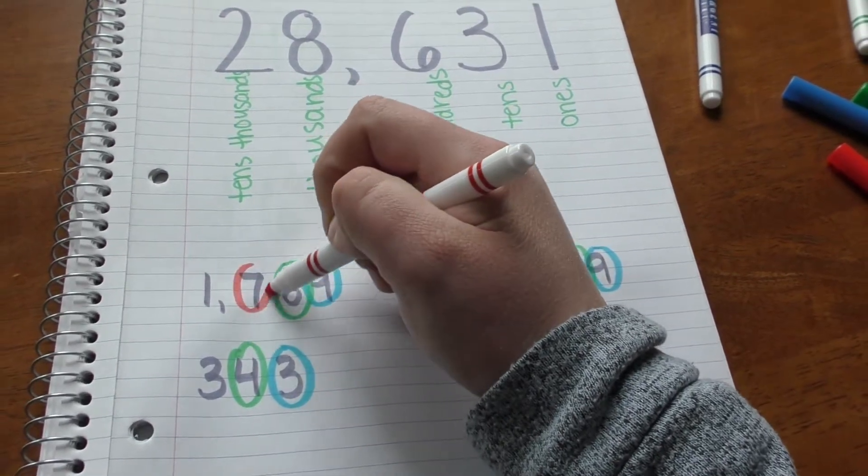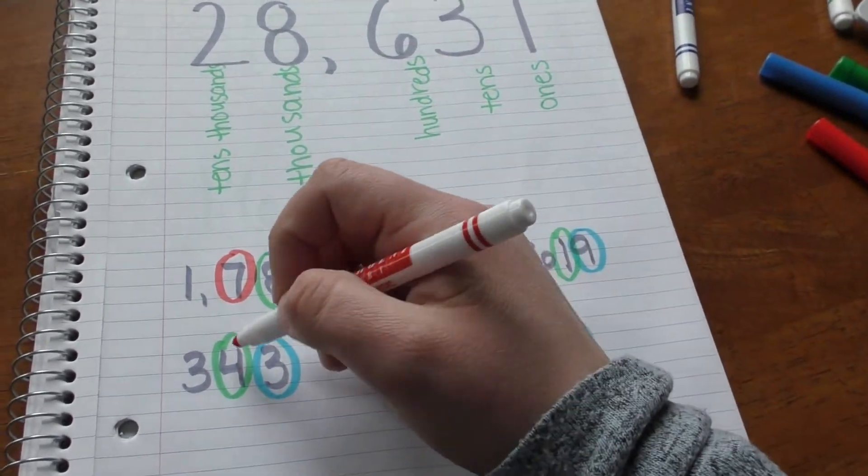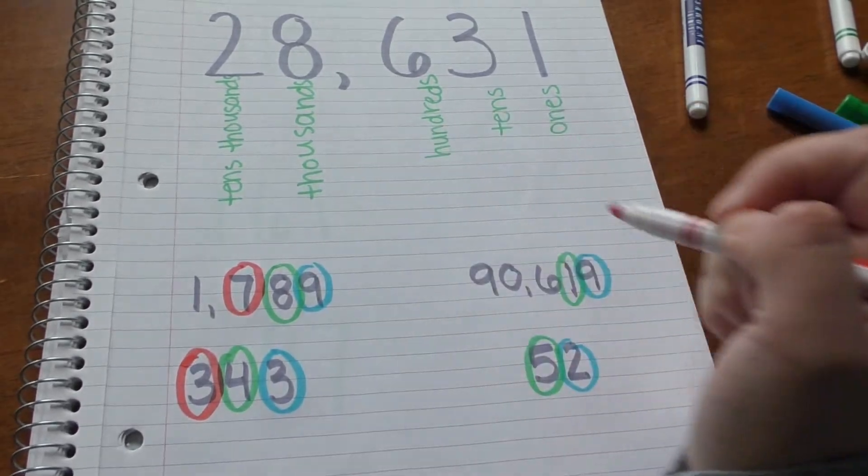So 1, 2, 3, 7 is my hundreds place, 1, 2, 3, 3 is my hundreds place.